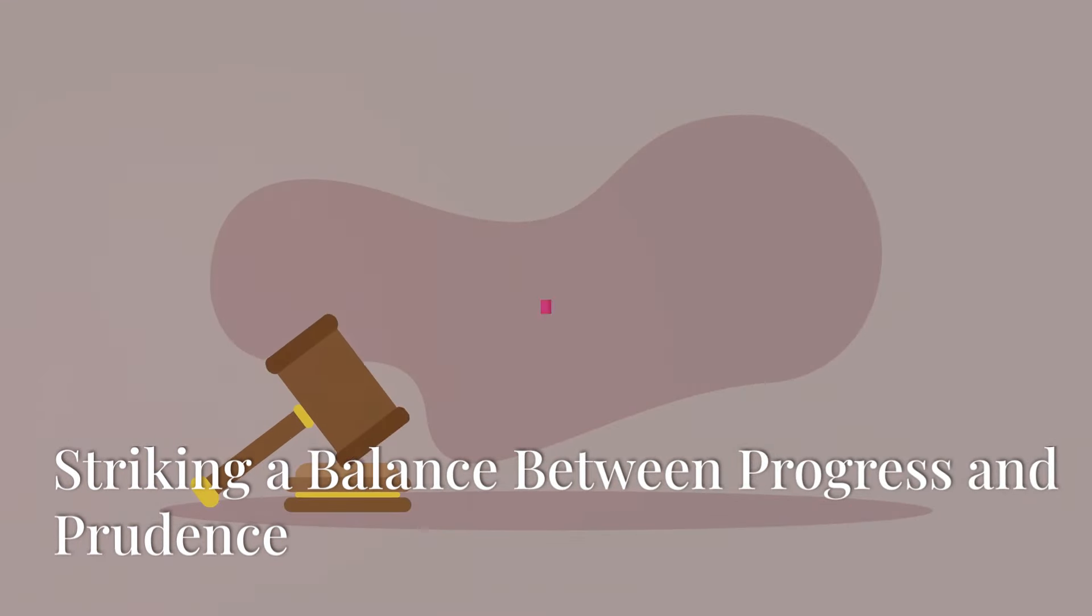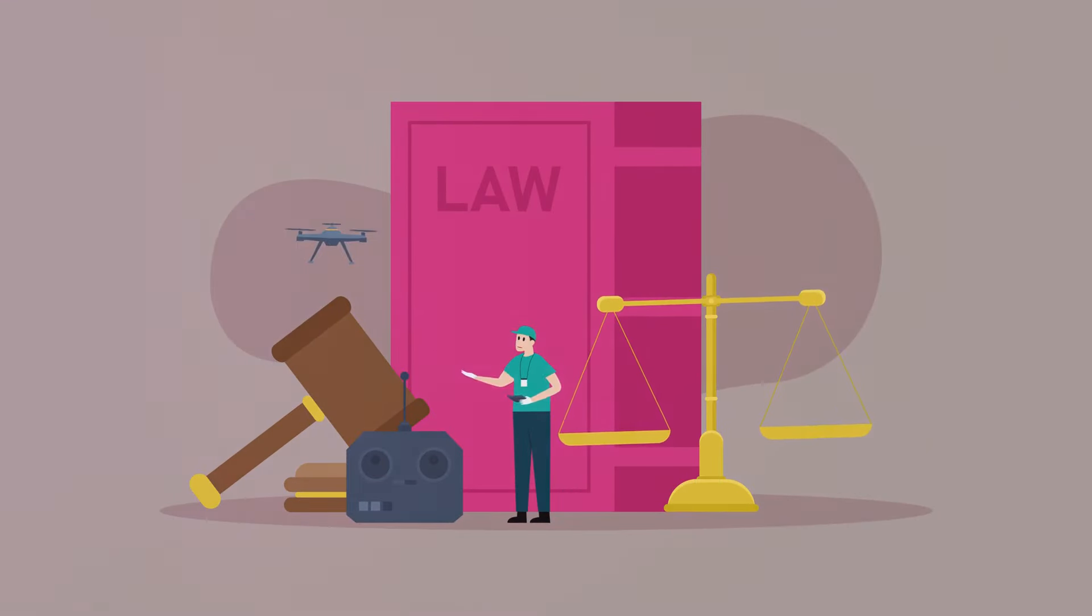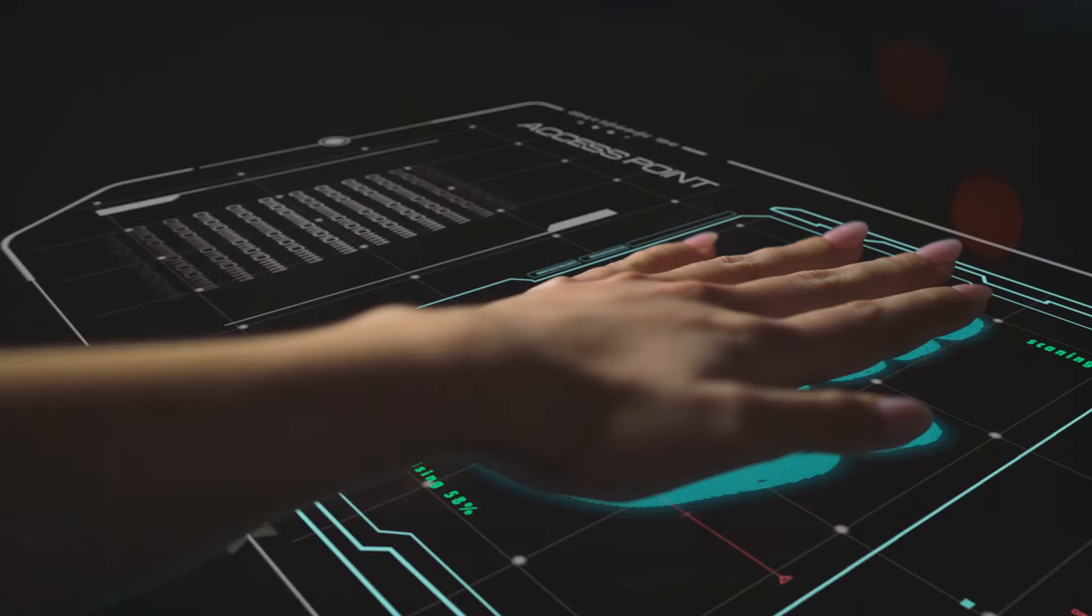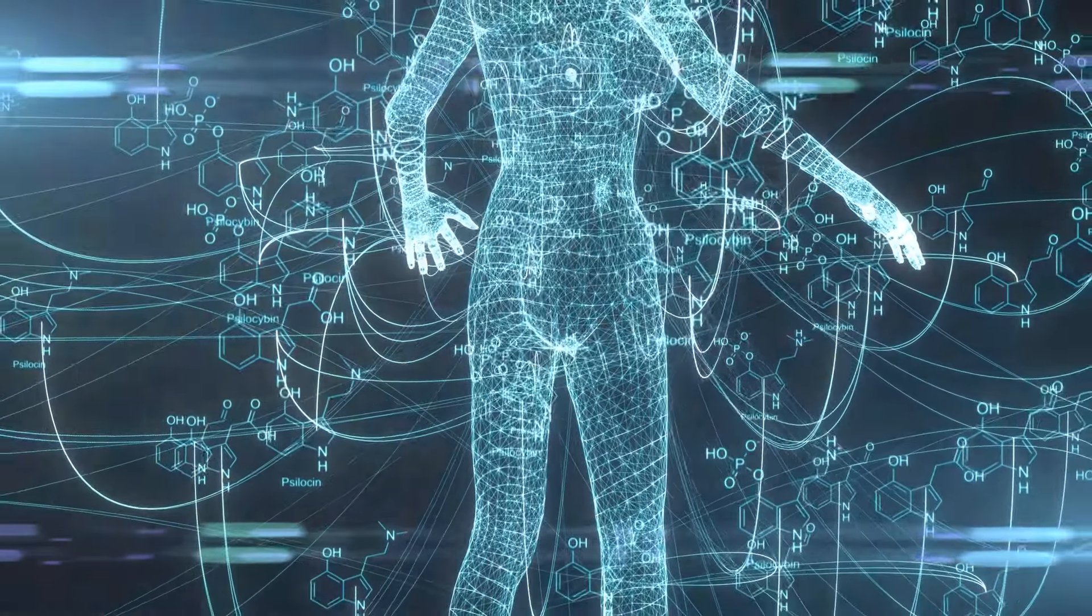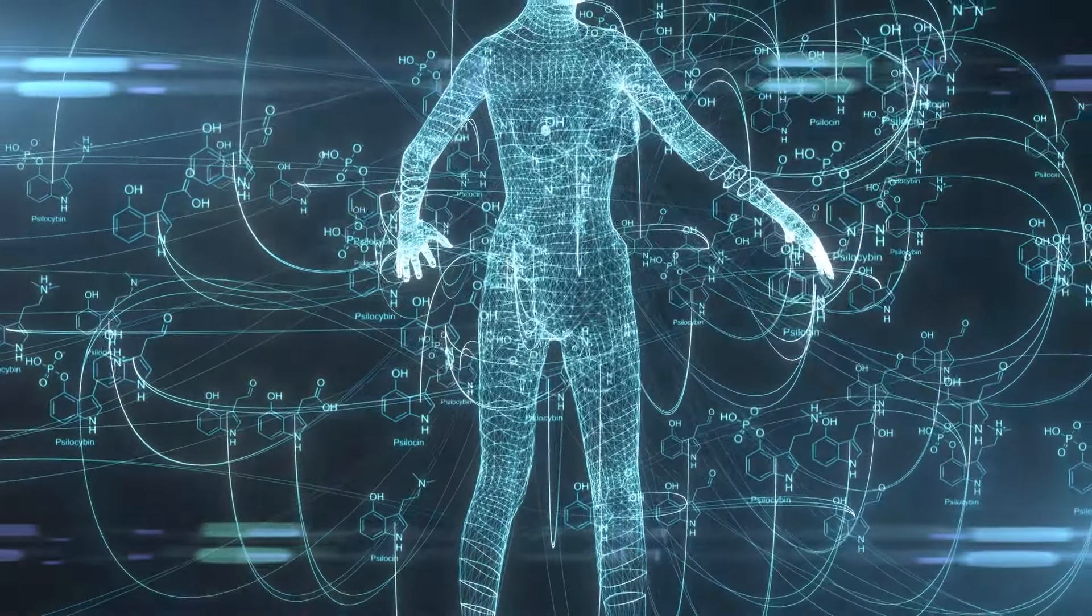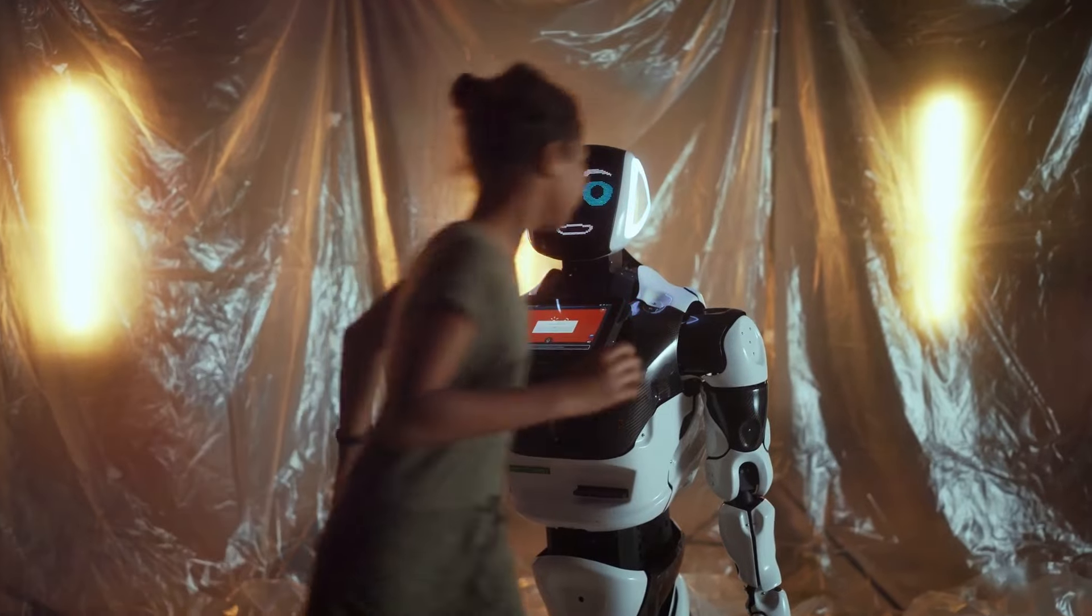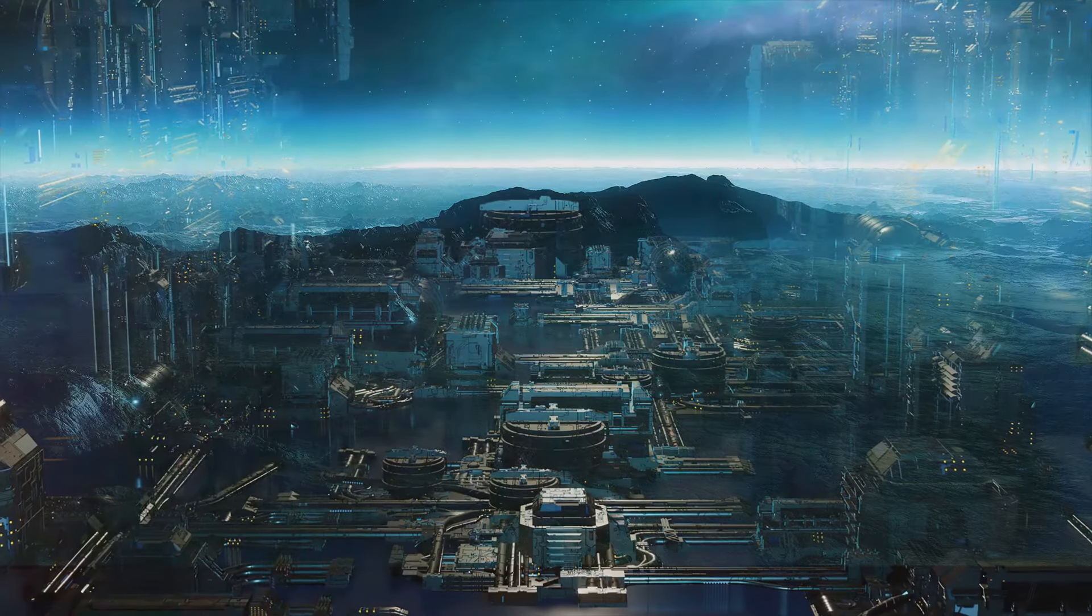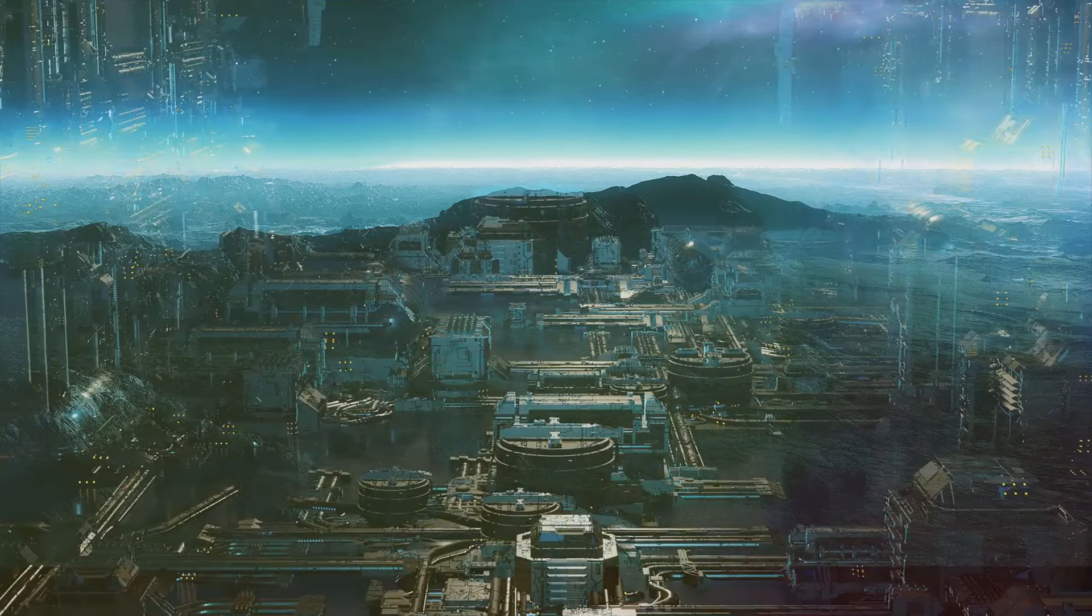As with any transformative technology, human augmentation raises complex ethical and societal questions that demand careful consideration and regulation. Striking a balance between fostering innovation and mitigating potential risks is crucial. We need to establish clear guidelines and regulatory frameworks that govern the development and deployment of these technologies. How do we ensure that these technologies are used responsibly and ethically? How do we prevent the creation of a two-tiered society divided between the augmented and the unenhanced?